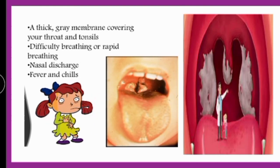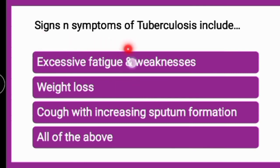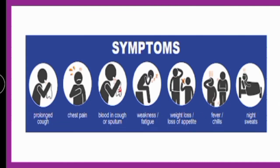Question five: signs and symptoms of tuberculosis include excessive fatigue, weakness, weight loss, cough with increasing sputum formation over a longer time, or all of the above. The correct answer is all of the above. Weight loss is a characteristic sign of tuberculosis. Other symptoms include prolonged cough, chest pain, blood in sputum, weakness, fatigue, loss of appetite, fever, chills, and night sweats.